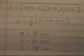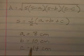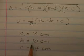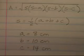This is problem number 10. Find the area of a triangle with sides 8 centimeters, 10 centimeters, and 14 centimeters.